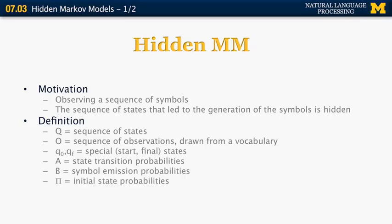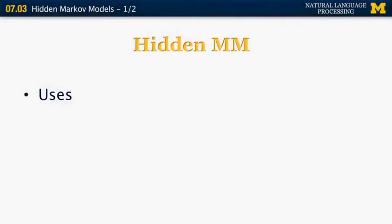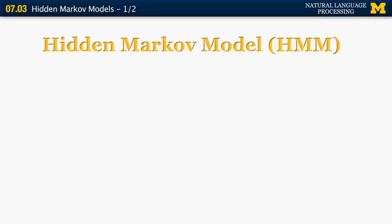Mu, the union of A, B, and pi, is the complete probabilistic model that determines the hidden Markov model. In many machine learning algorithms, one goal is to find the values of mu — equivalently, to find A, B, and pi. Hidden Markov models are used in part of speech tagging, speech recognition, gene sequencing, and many other areas of research.